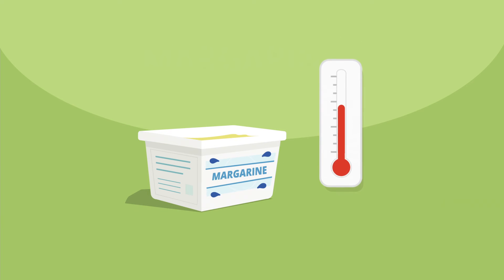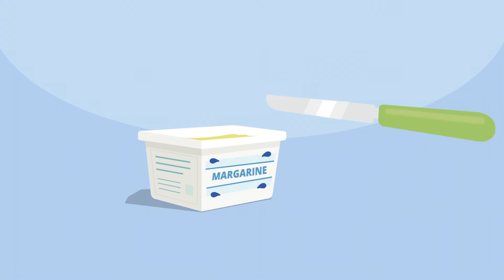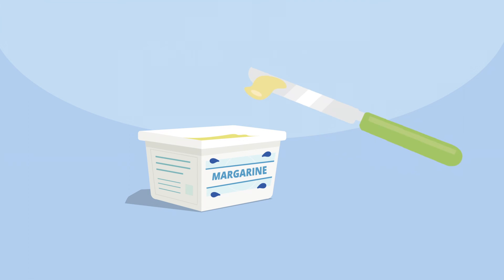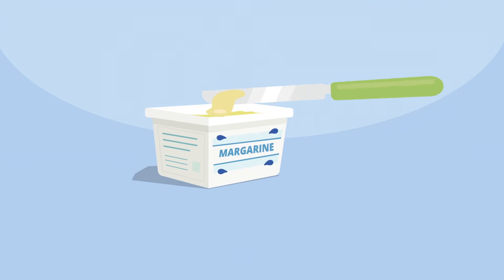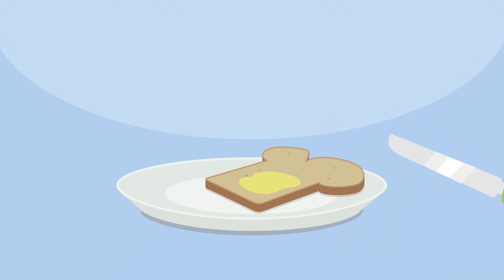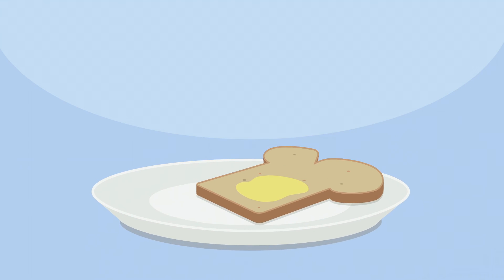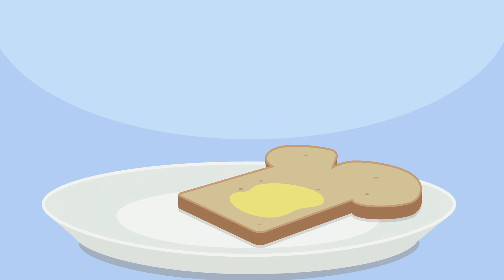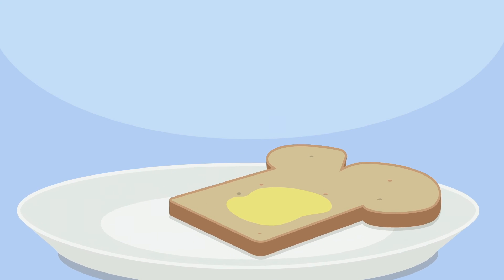The water and oil phase are mixed and cooled down, then kneaded into a viscous mass which is not completely solid and easily spreadable. A good spreading margarine has good taste and a nice texture, also when taken directly from the fridge.